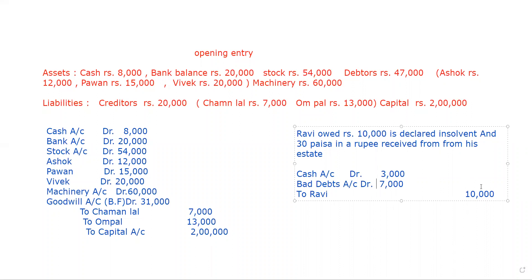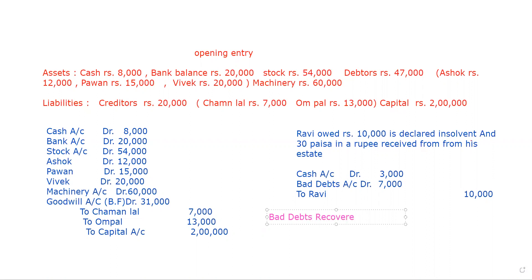The next entry is for bad debts recovered next year. Suppose if these bad debts are recovered, the bad debts recovered is just income for the business. If the bad debts are recovered, cash is coming to the business — so cash account debit, to bad debts recovered account. Bad debts recovered is a kind of income for the business because it was already debited as a loss.